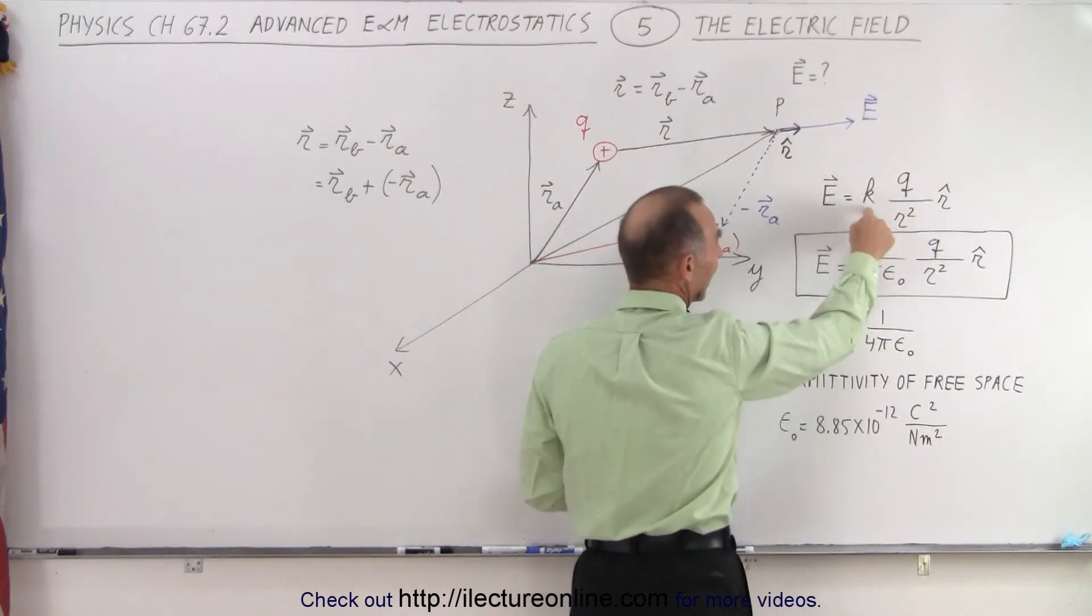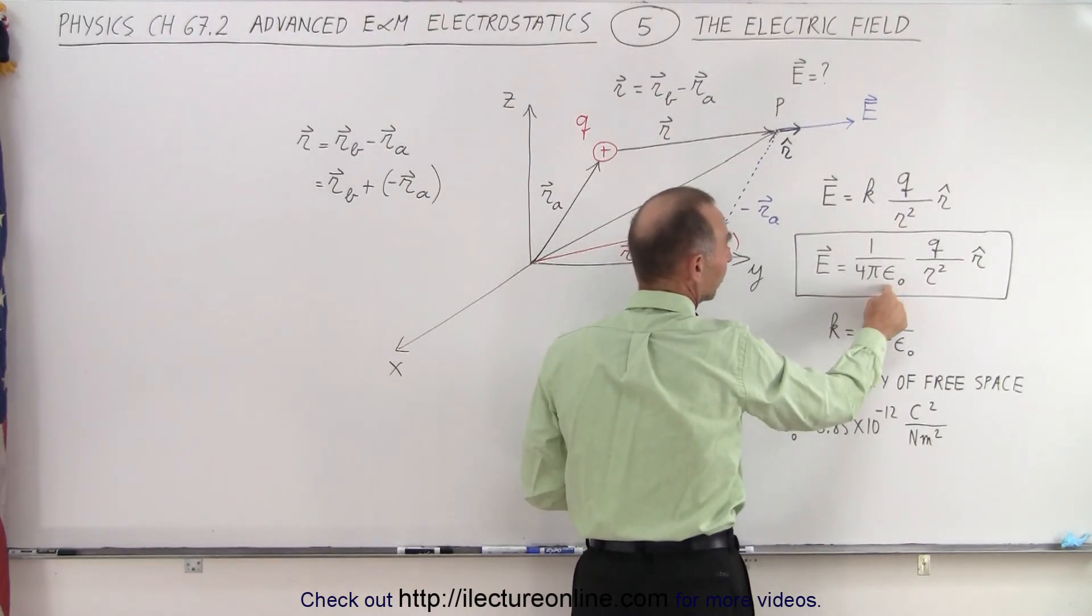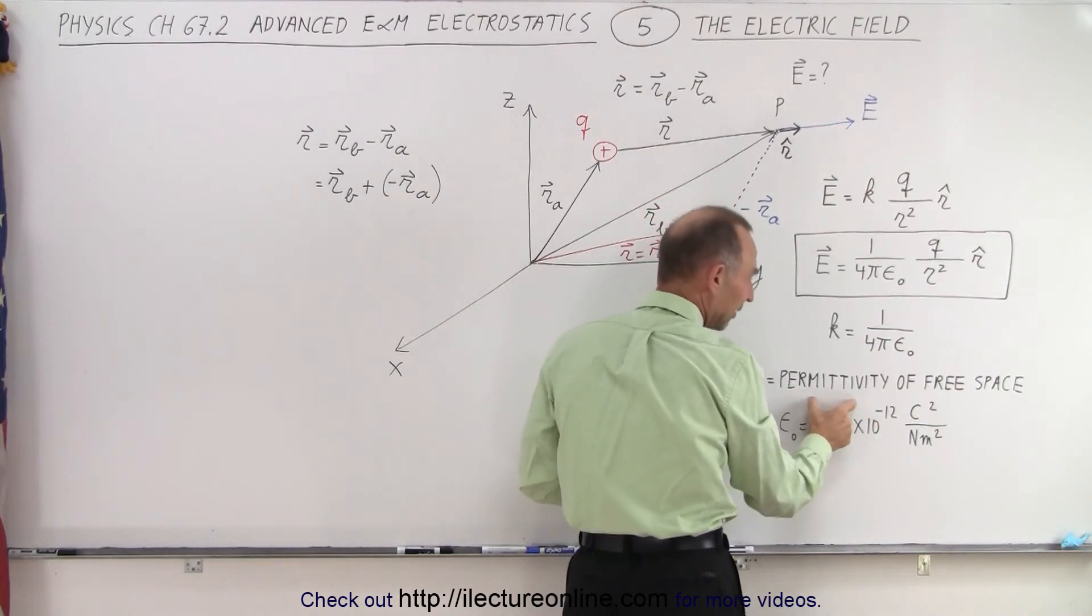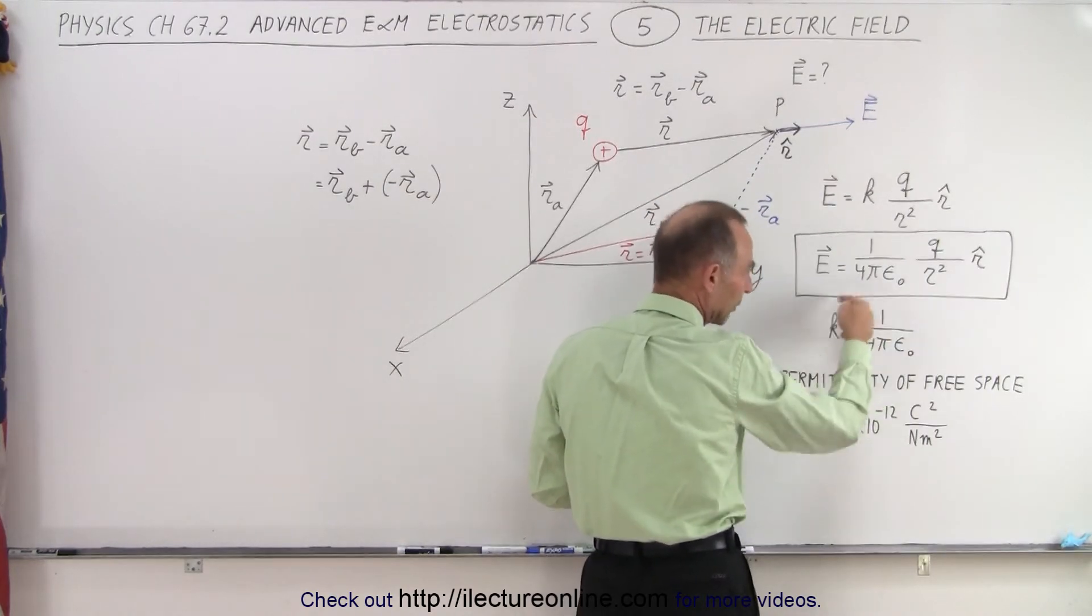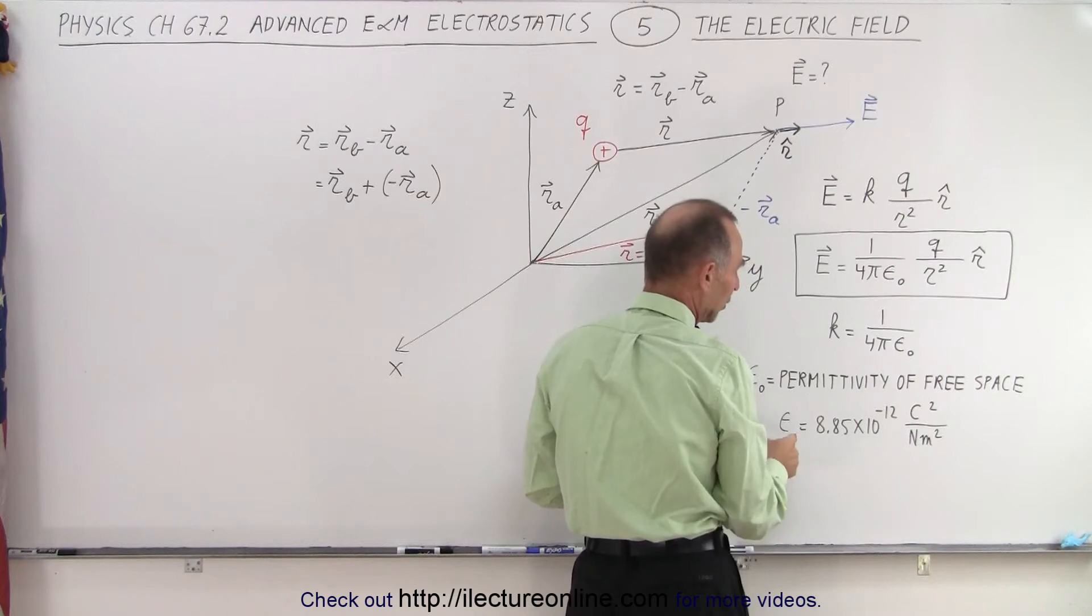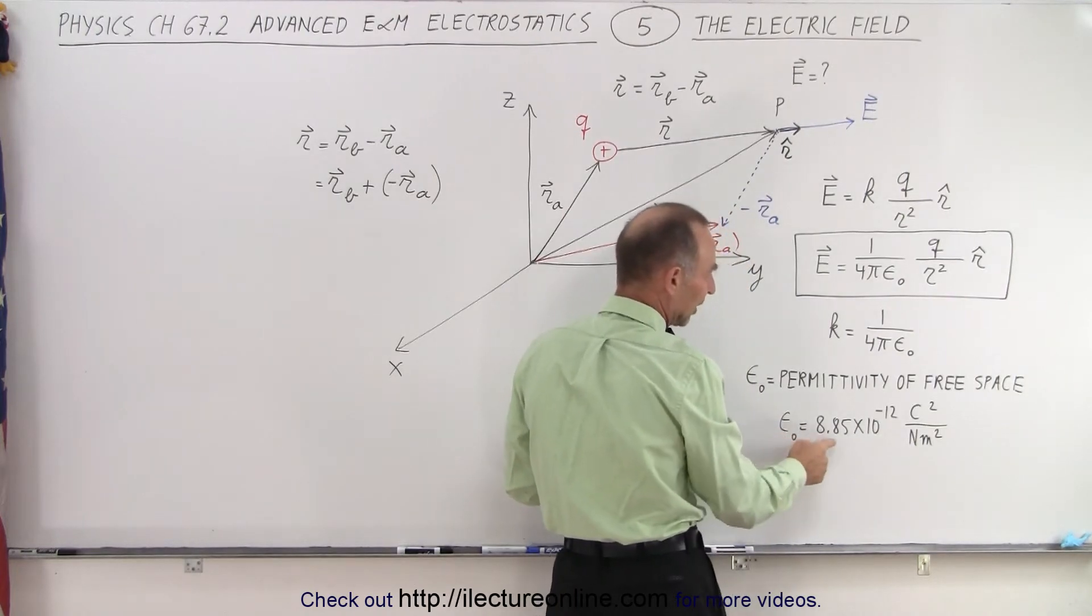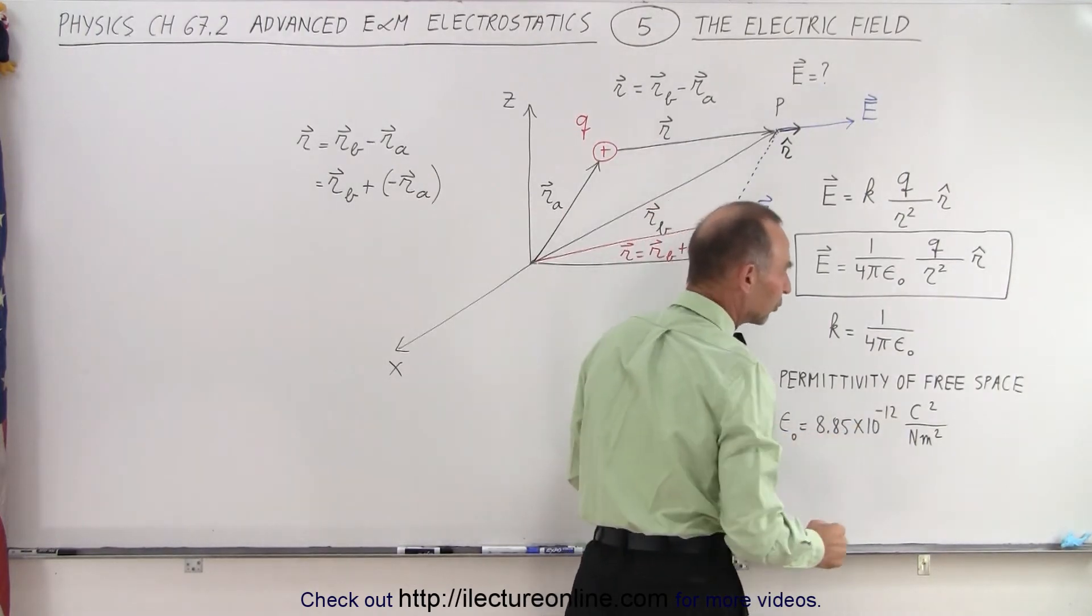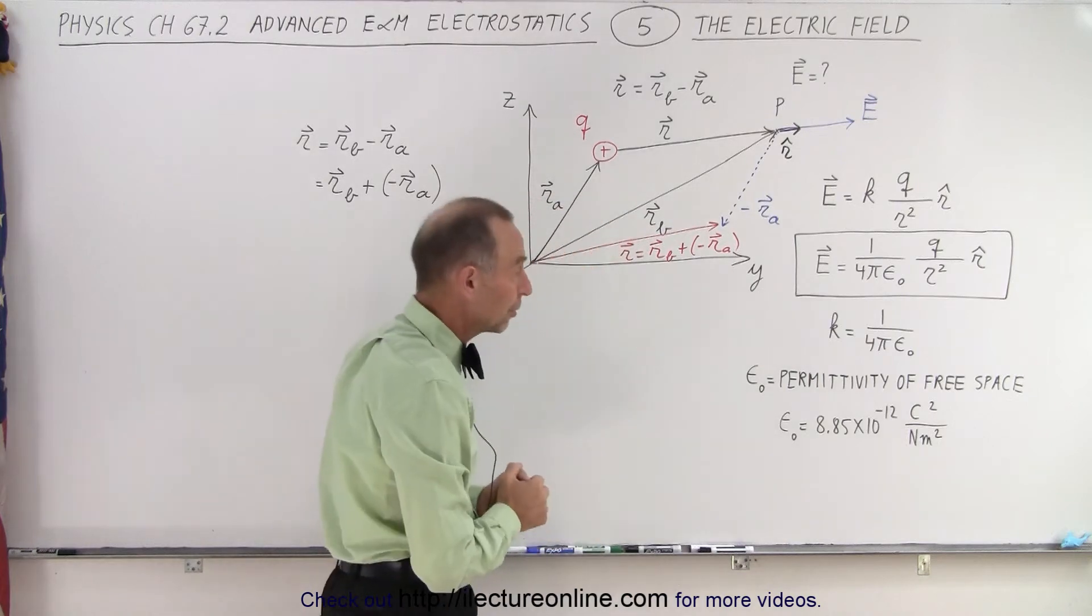We can also say that k can be written as 1 over 4 pi epsilon sub not, where epsilon sub not is the permittivity of free space. We can make the substitution, knowing that the permittivity of free space is 8.85 times 10 to the minus 12 coulomb squared divided by Newton meter squared.